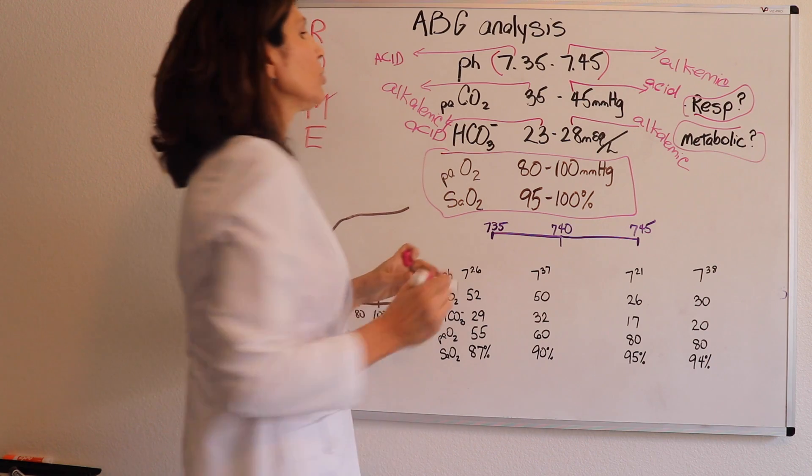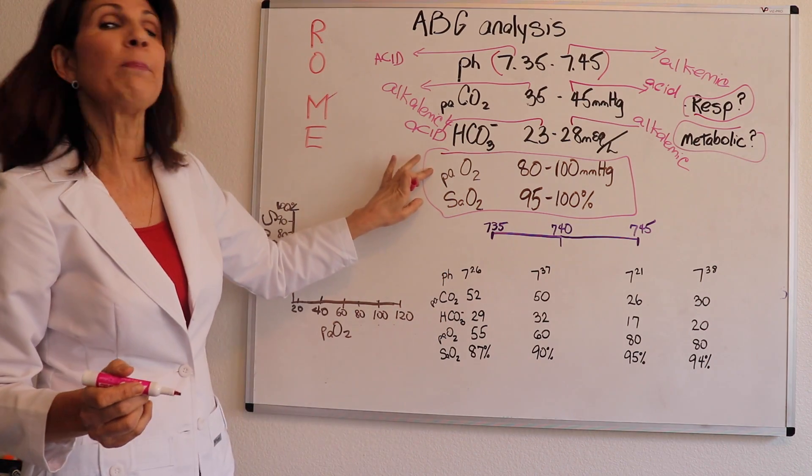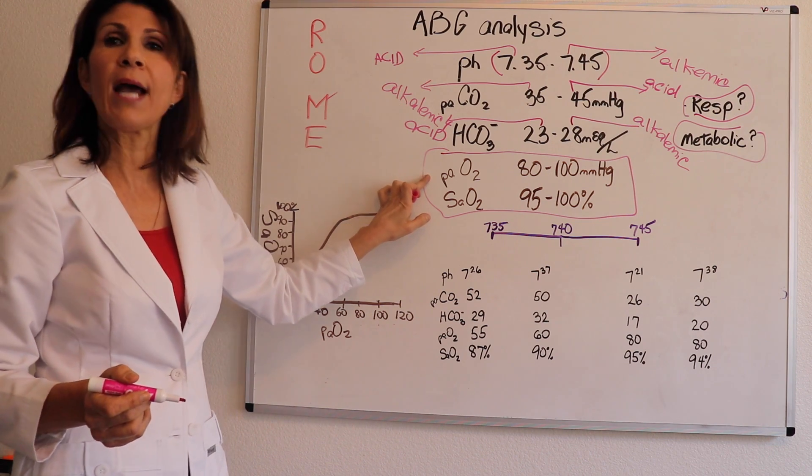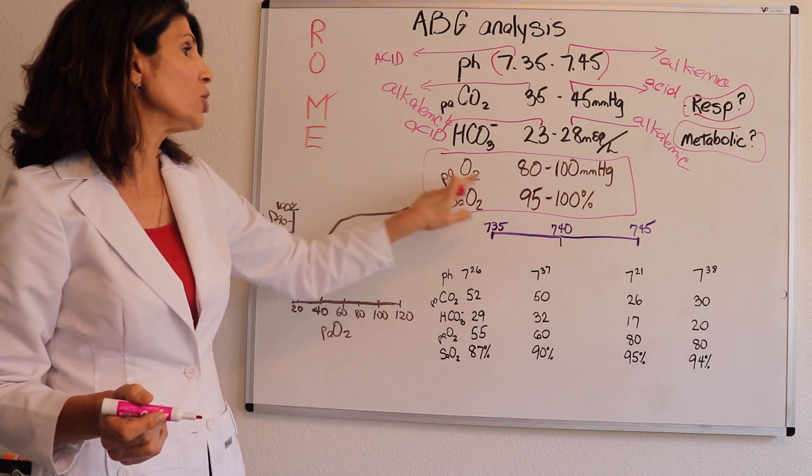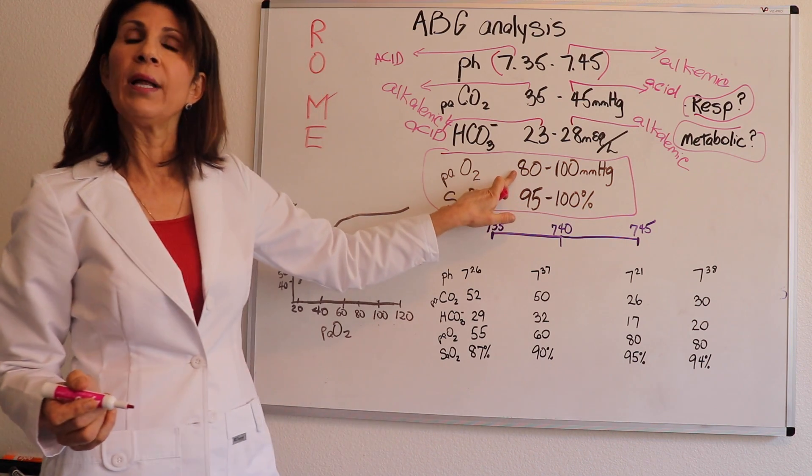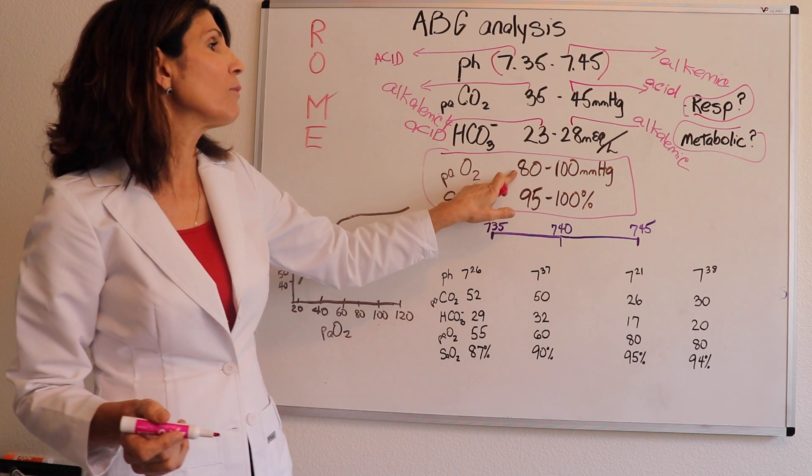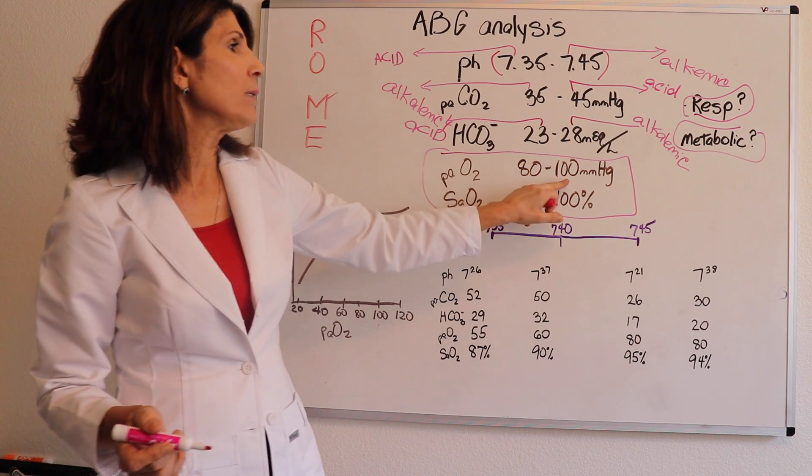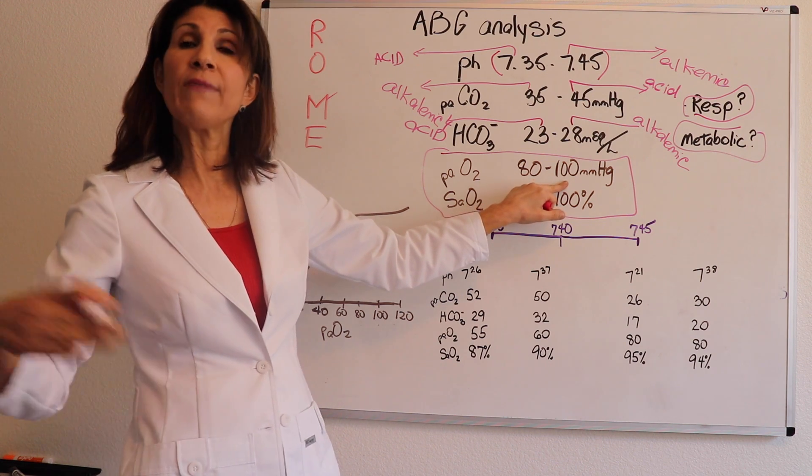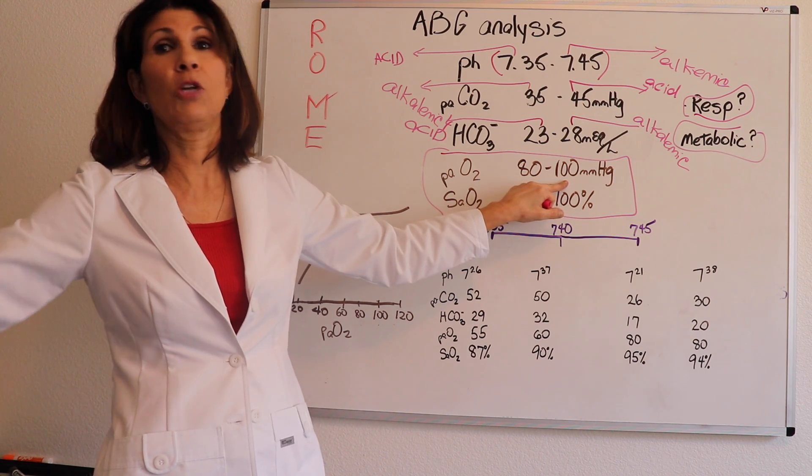So the two components left is the PaO2, same little Pa as we saw with the carbon dioxide, meaning partial pressure of oxygen in the arterial blood. It isn't a pressure normal, 80 to 100 millimeters of mercury. Now, keep in mind that when we give the patient supplemental oxygen, that this number, this value can go away past 100. We can put all kinds of oxygen and really increase those pressures, but it doesn't necessarily mean that's good.